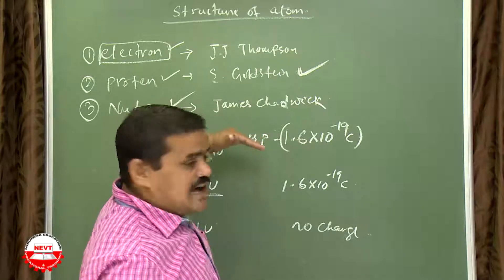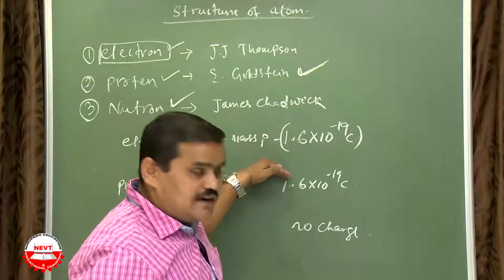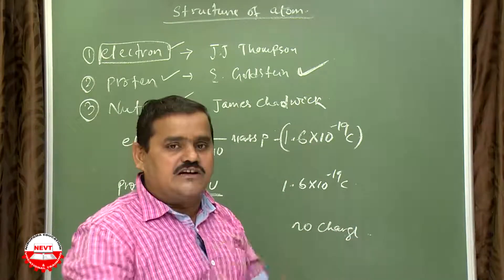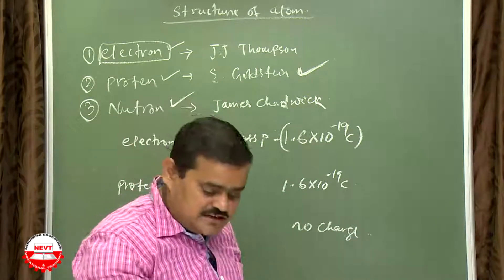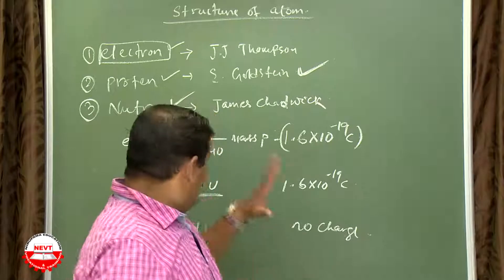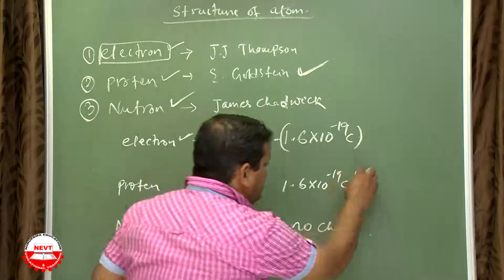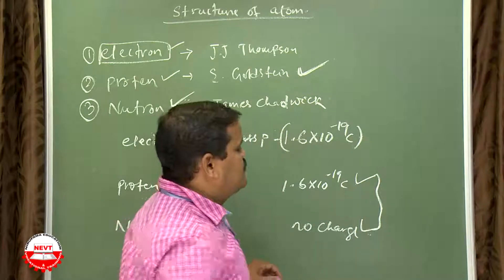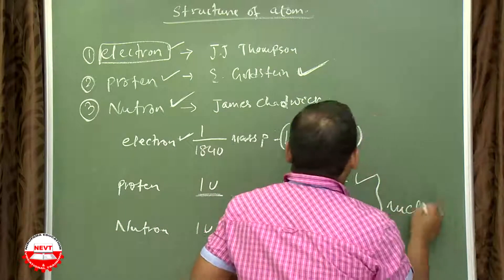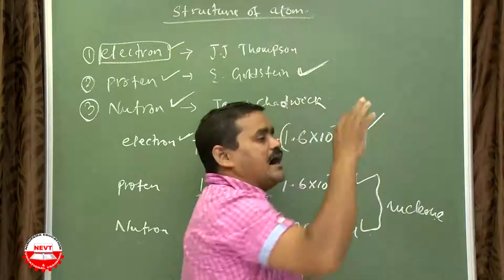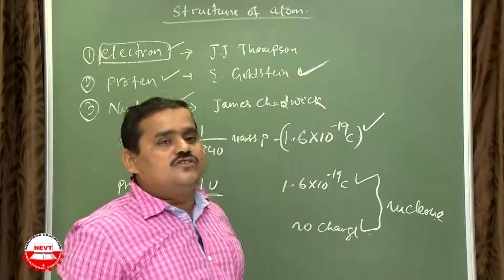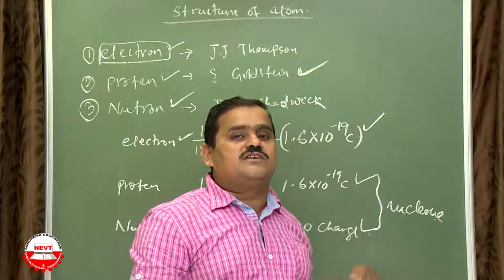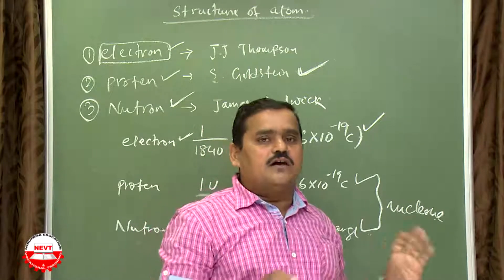Electrons mainly rotate around the nucleus. There is one nucleus at the center of the atom — this was discovered by Rutherford. Protons and neutrons both lie inside the nucleus, while electrons lie outside the nucleus and revolve around it in specified orbits.